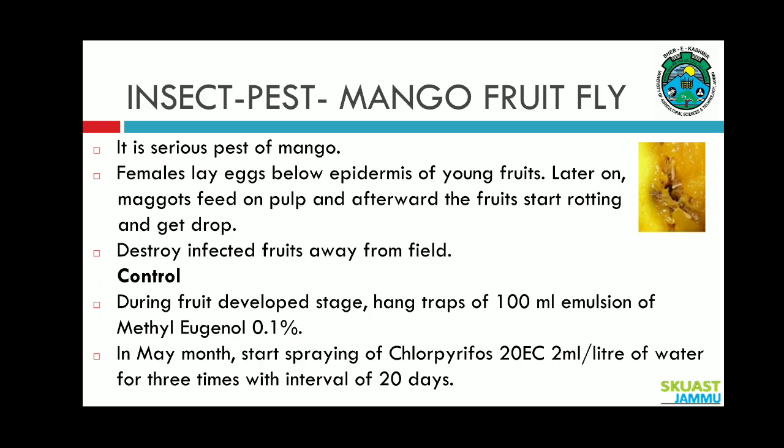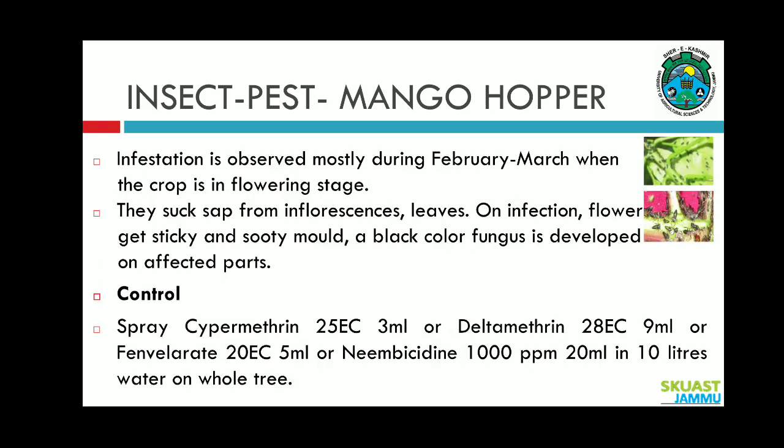Start spraying of chlorpyrifos 20 EC at the rate of 2 ml per liter of water, for three times with an interval of 20 days. Mango hopper: the infestation is observed mostly during February–March when the crop is in the flowering stage. They suck sap from the inflorescence and leaves. You can see in the figure the small black hoppers. On infestation, the flower gets sticky and sooty mold — a black color fungus — is developed on affected parts.